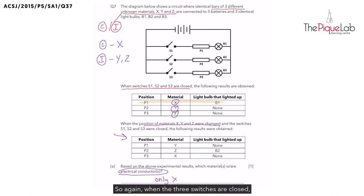So again, when the three switches are closed, we have only bulb B2 lighting up like this. So this pathway that I'm tracing here is the only closed circuit which allows electricity to flow through bulb B2, causing it to light up.